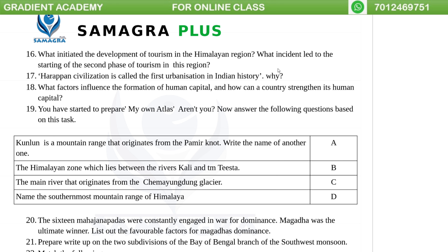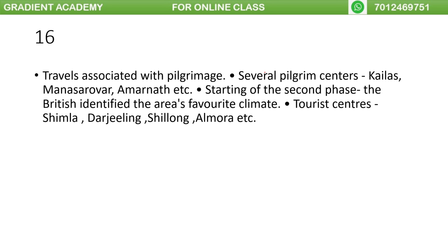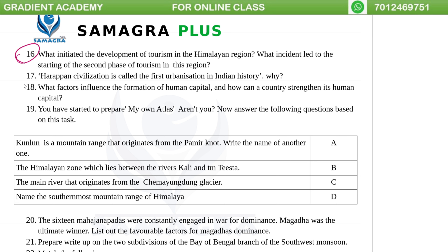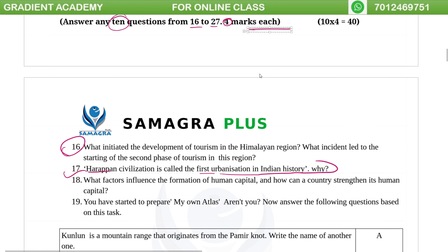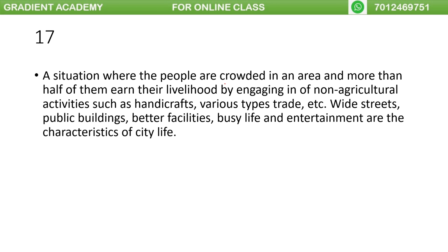What initiated the development of tourism in the Himalayas region? The first phase of tourism in the region is called the first urbanization in Indian history. More than half of their earning livelihood by engaging in non-agriculture activities.